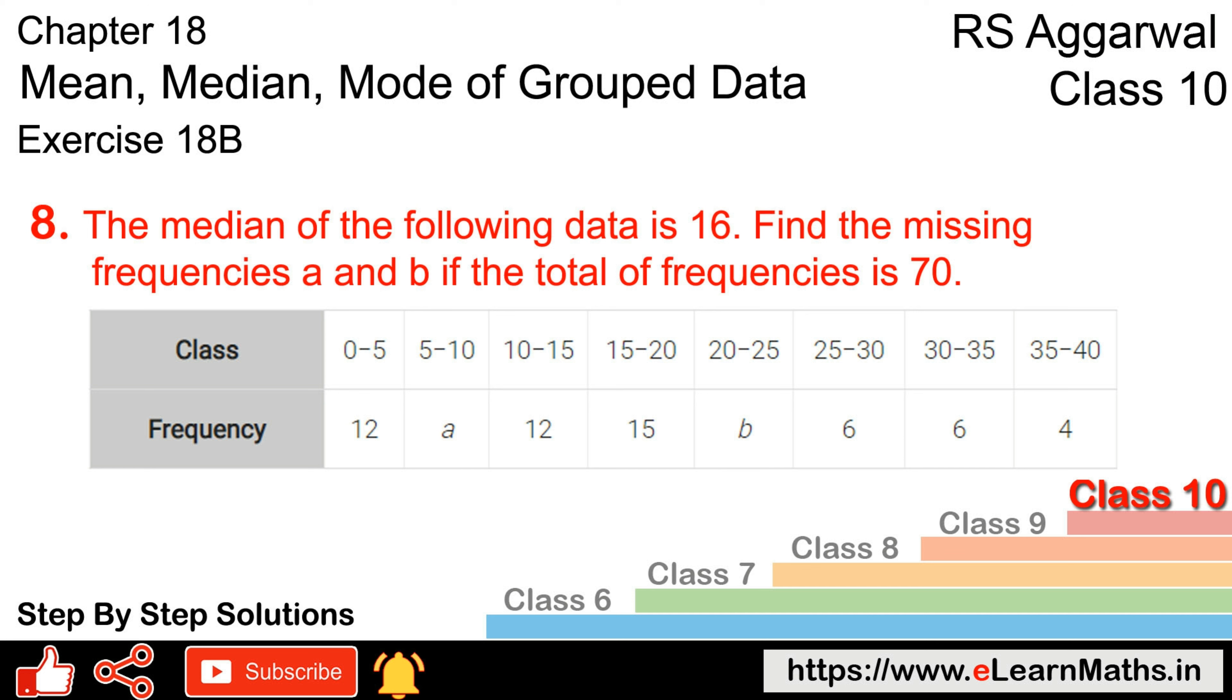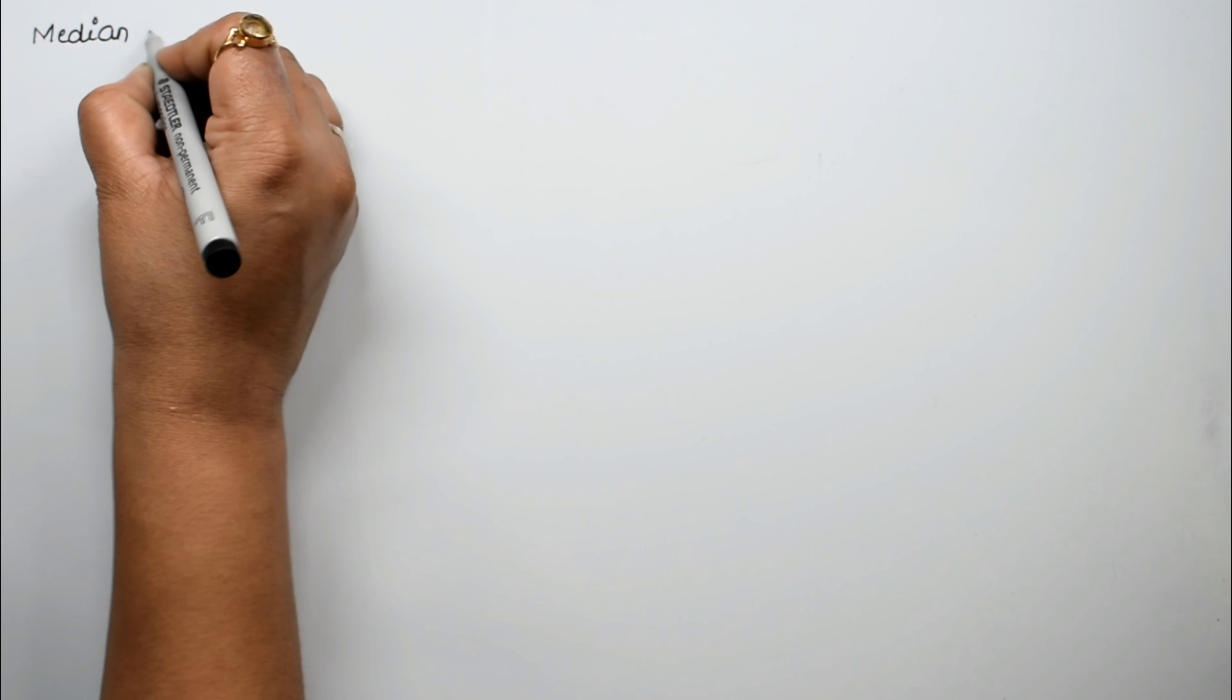Let's do question number 8 of exercise 18B on mean, median, and mode of grouped data. The question states the median of the following data is 16. Median equals 16.